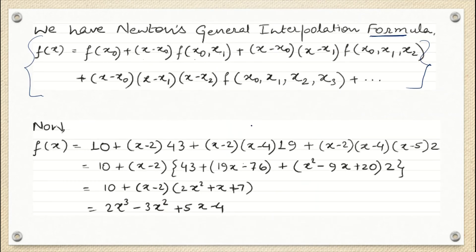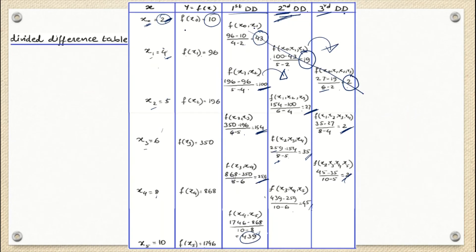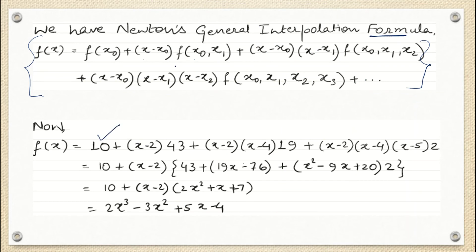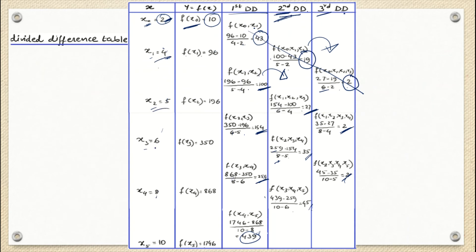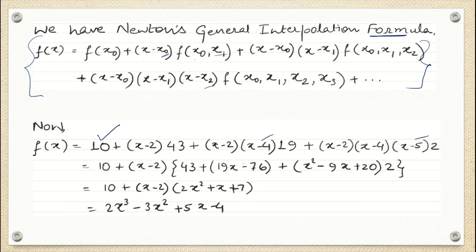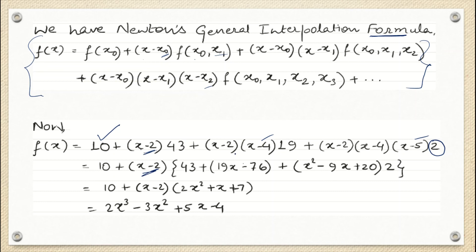Now we apply Newton's general interpolation formula. f(x) = f(x₀) + (x - x₀)·f[x₀,x₁] + (x - x₀)(x - x₁)·f[x₀,x₁,x₂] + ... We use only the first values from each divided difference column: f(x₀) = 10, f[x₀,x₁] = 43, f[x₀,x₁,x₂] = 19, and the third difference = 2. Substituting and simplifying, taking (x - 2) common and expanding, we obtain the final interpolation polynomial.